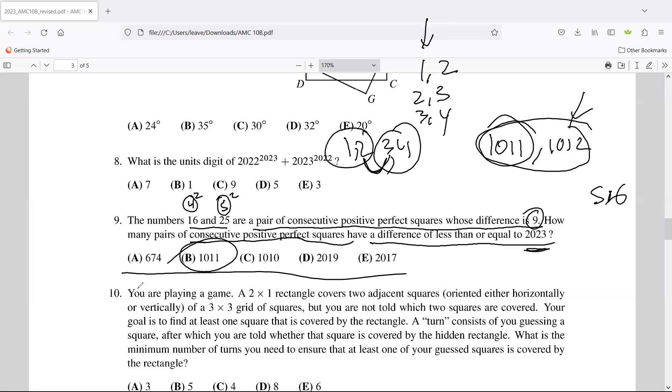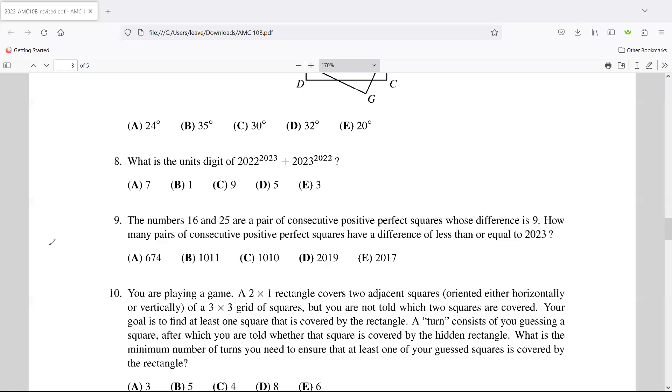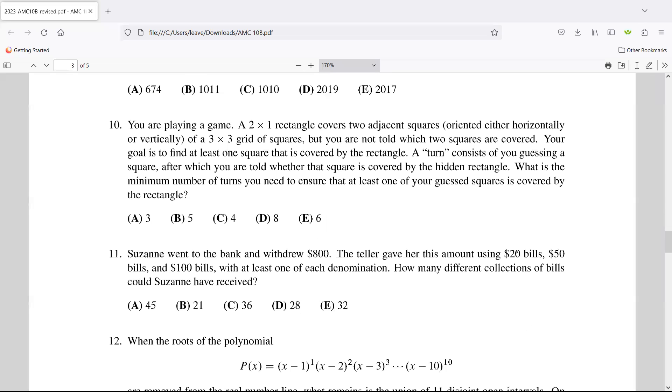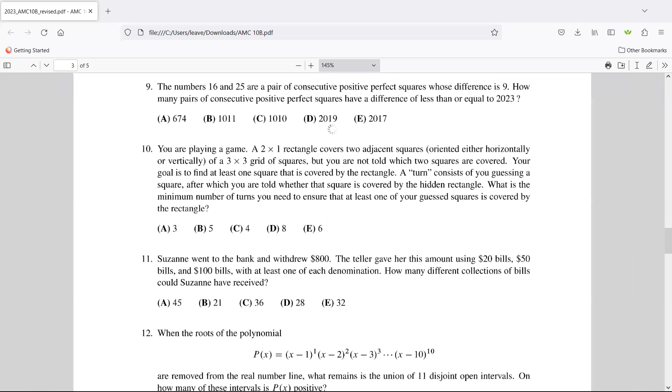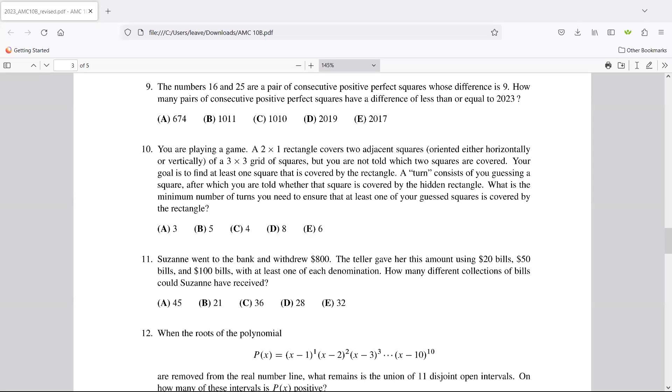And since we end on this one, it must be 1011. Okay, let's get to number 10. A two by one rectangle covers two adjacent squares oriented either horizontally or vertically of a three by three grid of squares. So I'm going to make a three by three grid.